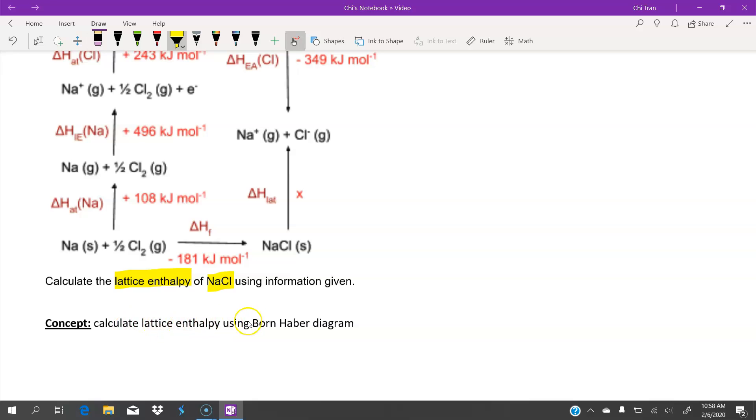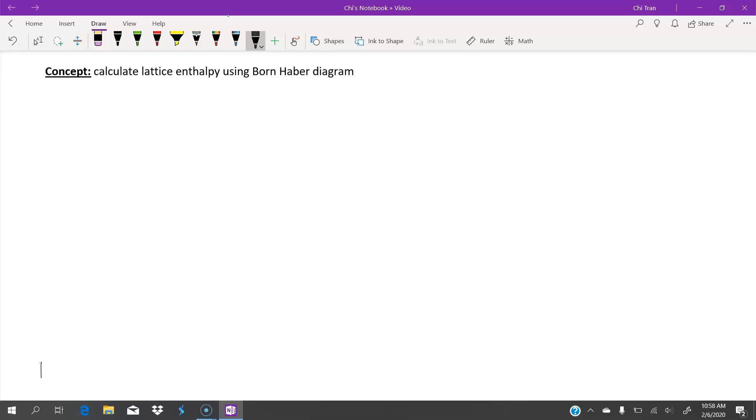The Born-Haber diagram is set up with reactants - a metal and a halogen - that react to form the product of a salt. You can see how this equation is balanced. This step is called the enthalpy of formation. But the Born-Haber diagram will show us the smallest steps that it takes to go from this reactant to the product.